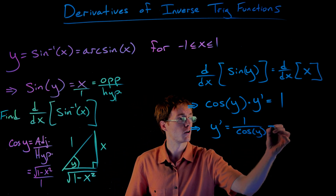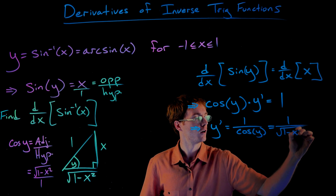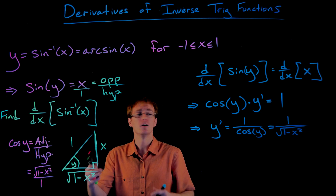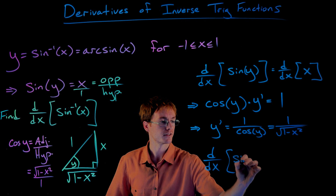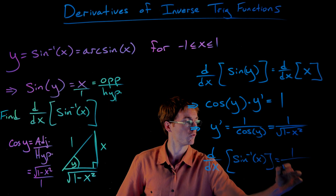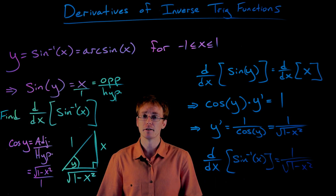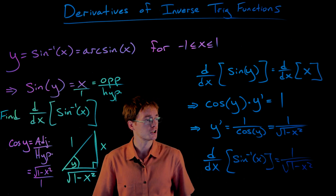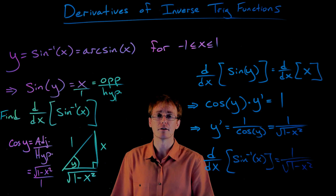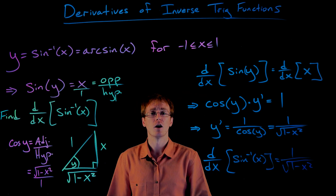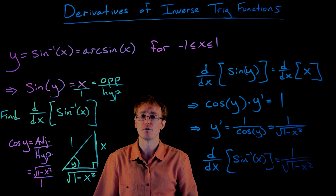Plugging that into our derivative work, we have y prime equals 1 over the square root of 1 minus x squared. So we have successfully found the derivative of our inverse sine function: the derivative of sine inverse of x is equal to 1 over the square root of 1 minus x squared. Going back to our earlier discussion, this formula only makes sense for x values between negative 1 and positive 1, corresponding to the domain of our inverse sine function. We can't plug in the endpoints because it's not differentiable there, but it is differentiable everywhere else in the domain.